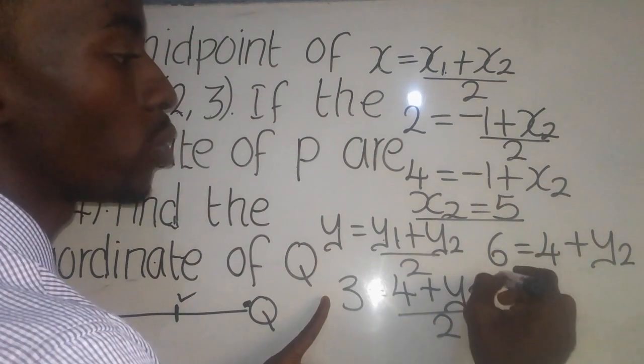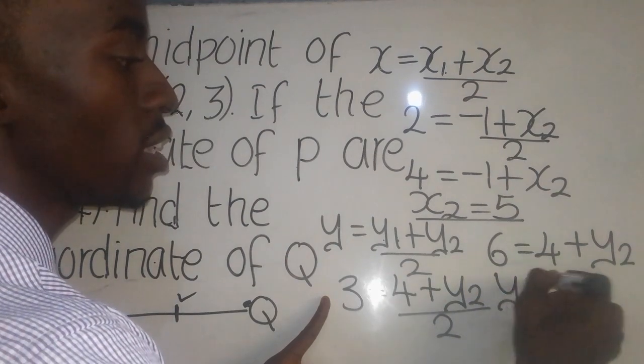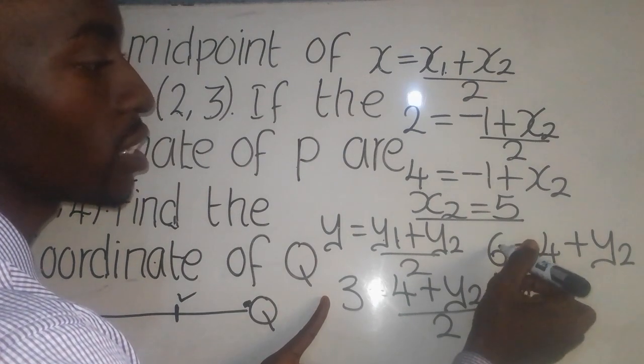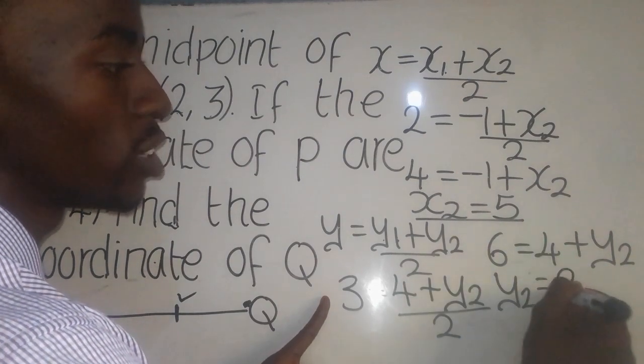Now, this Y2 will come down like this, equal to. When this 4 comes to this side, it's going to be 6 minus 4, which will give me a 2.